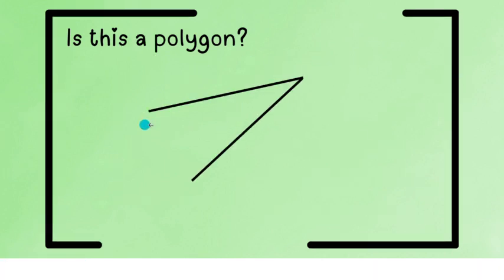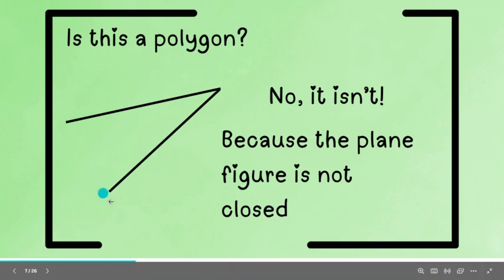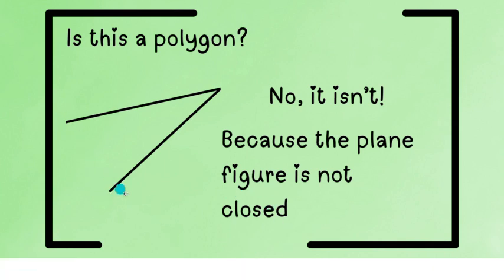Next figure, we have this. Is this a polygon? No, it isn't. Because the plane figure is not closed. So, may nakabuka dito at hindi nasara. So, this is not a polygon. Because based on the definition of the polygon, it has to be a closed plane figure.